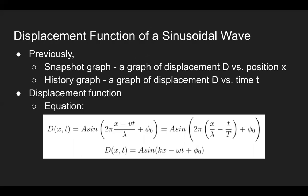In the last video, if you remember the snapshot and history graphs, both related to displacement D. For the snapshot graph, it had a fixed time, so the displacement related to position. On the other hand, for the history graph, it had a fixed position, so the displacement related to time. Similar to the oscillations chapter, we had position, velocity, and acceleration functions for waves. But remember, those were only a function of time.